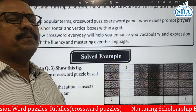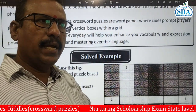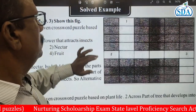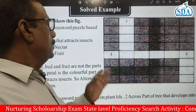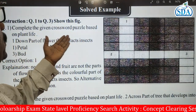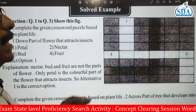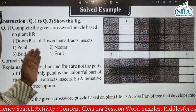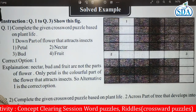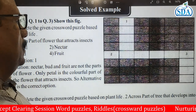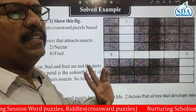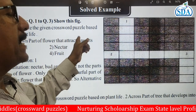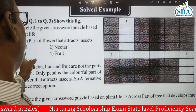We will see one example so you will get a clear-cut idea. In the given question figure, you need to complete the crossword puzzle based on plant life. The first clue is: Down — part of the flower that attracts insects. You have to fill the answer, and here are the options.